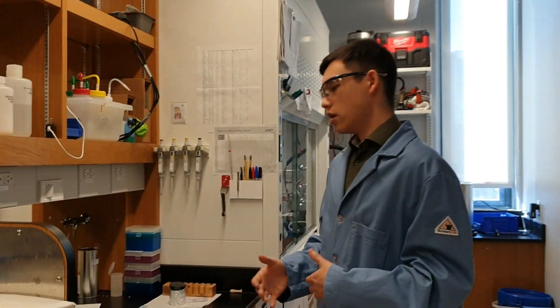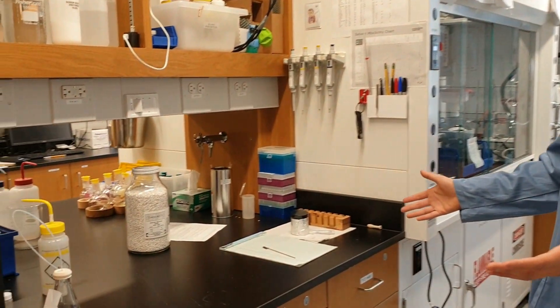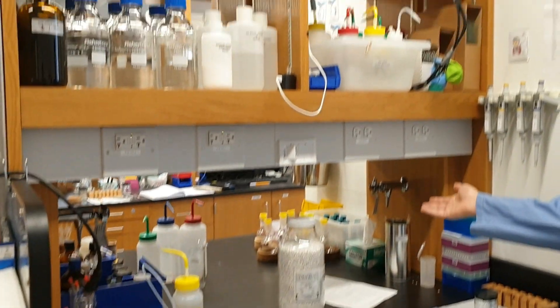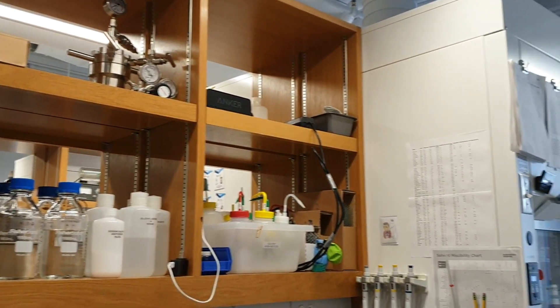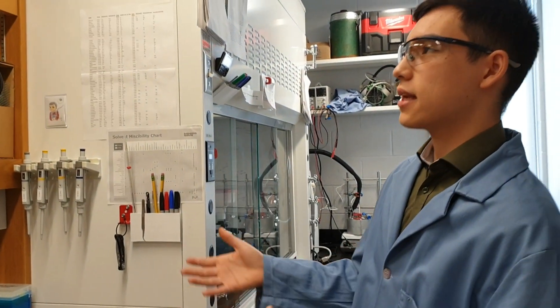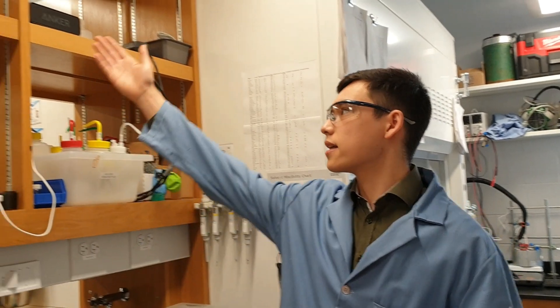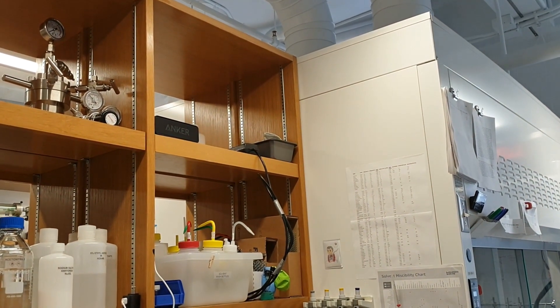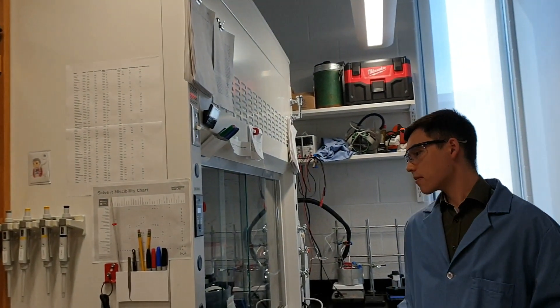Here we have another example of a student setup. You have the bench area, as you see. It's set up in a very different way than Ethan's setup, so this is Justin's setup. Everybody can personalize their own space. For example, Justin has put up his own music box here to play music in lab. Let's take a closer look at the fume hoods.